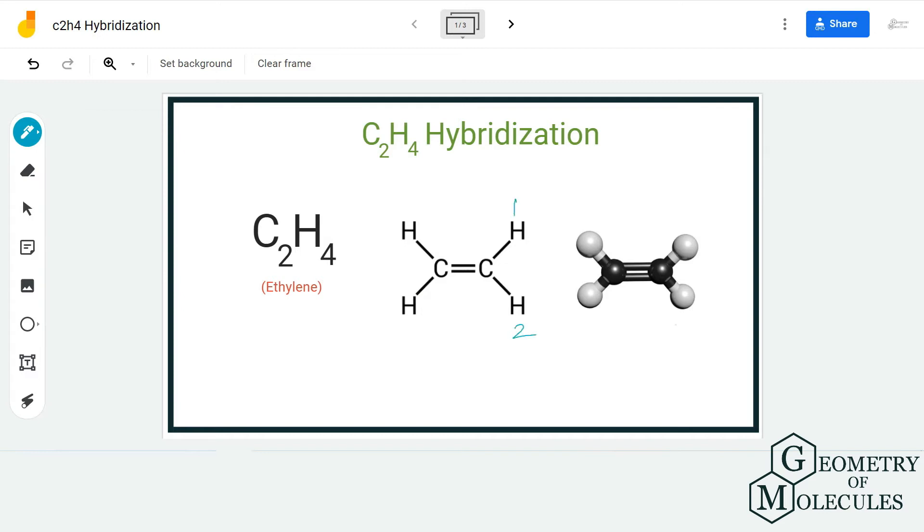There are three electron regions around this particular carbon atom. This is one electron region, two, and three. For steric number, we only consider sigma bonds or we look at the total number of electron regions around the given atom.